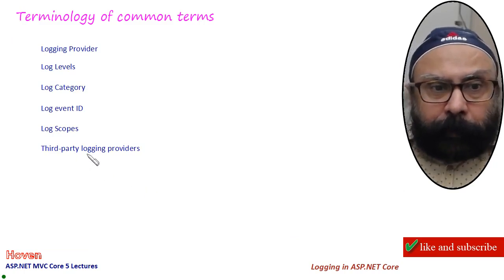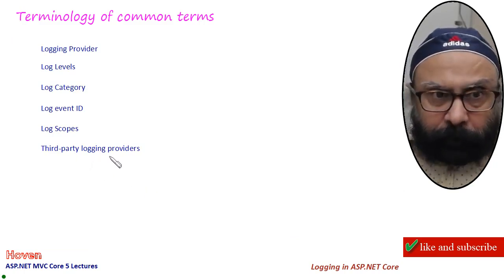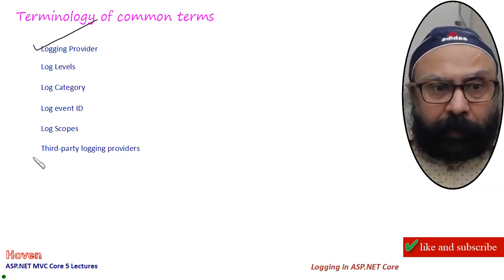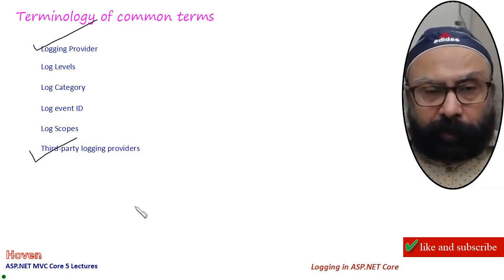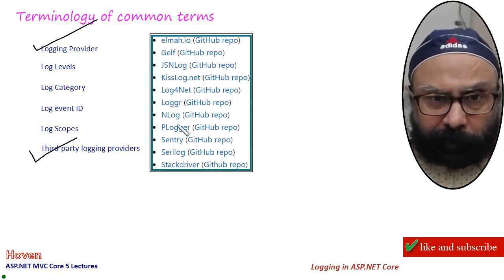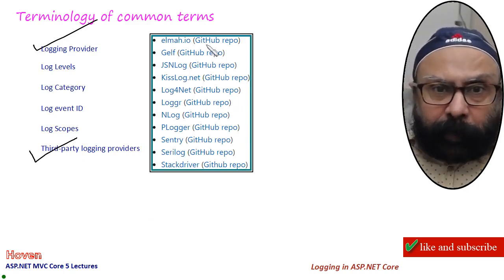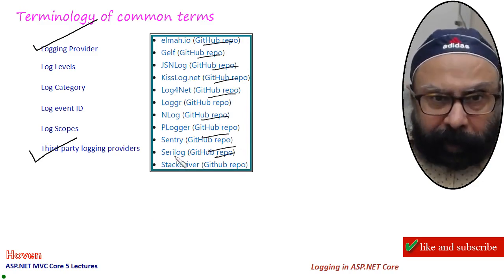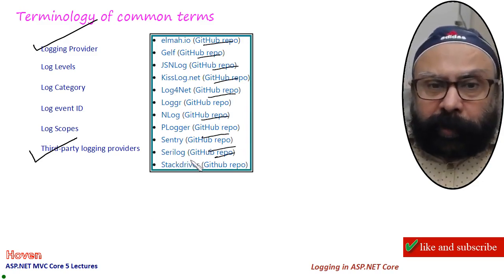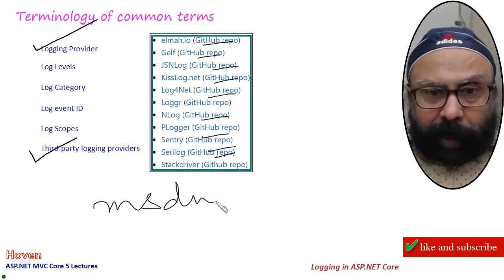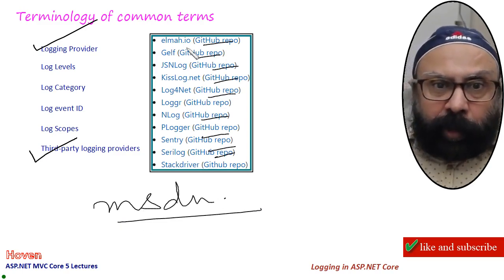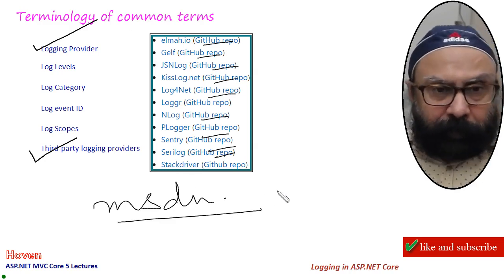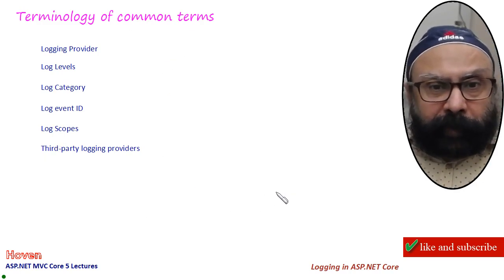There are third-party logging providers also. I gave you logging providers that are built-in but there are third-party logging providers as well. These are available on GitHub. For this you will have to visit the MSDN articles on logging - you will find all of them listed there. Let us move to the next part.